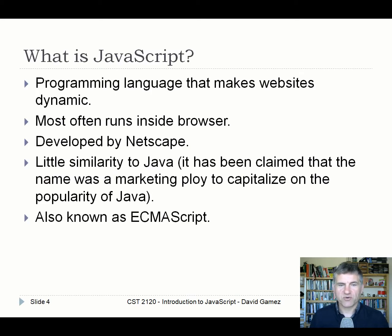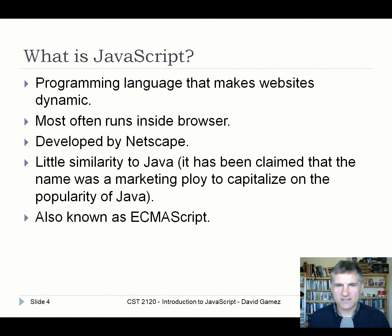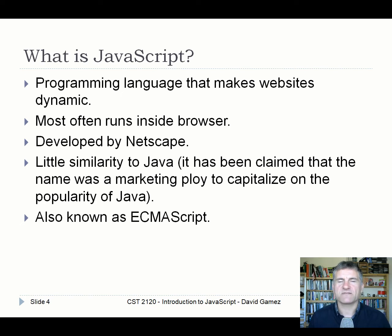JavaScript is a programming language that makes websites dynamic. You use HTML and CSS to give you the fixed content and formatting, but everything that changes in a website — everything that responds dynamically to user input — is done with JavaScript in modern websites. There was a whole phase of Flash being used for this kind of stuff, but now JavaScript is the language of the dynamic web.